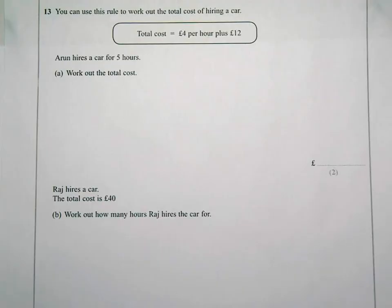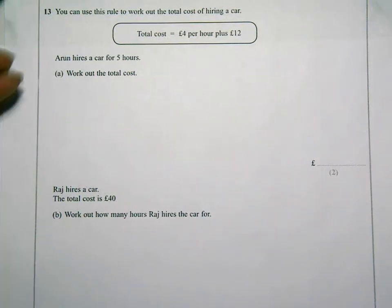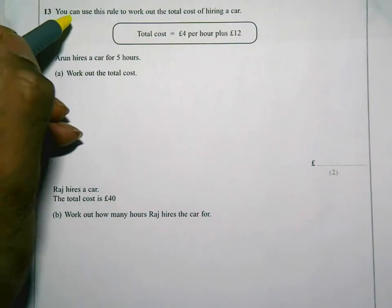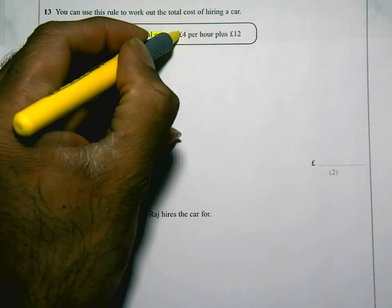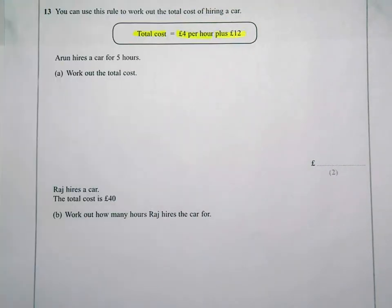Okay, here's question 13 on the foundation non-calculator paper. Let's read the question first. You can use this rule to work out the total cost of hiring a car: total cost equals four pounds per hour plus twelve pounds. So for every hour it's going to be four pounds, and then you add on twelve pounds as well.